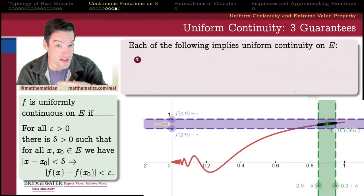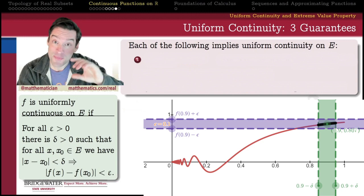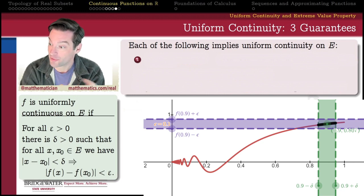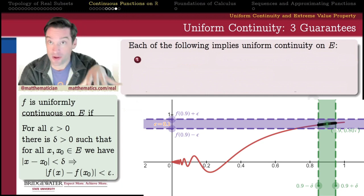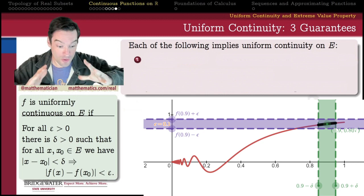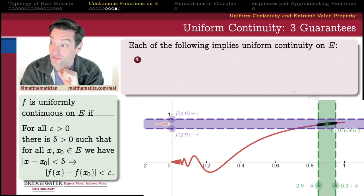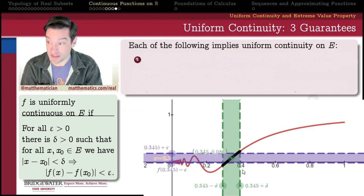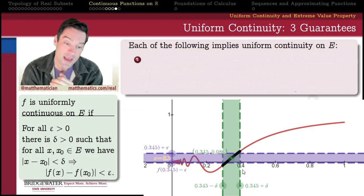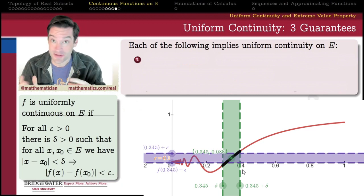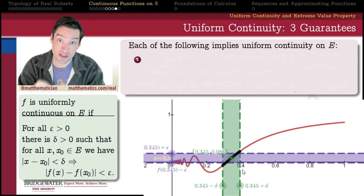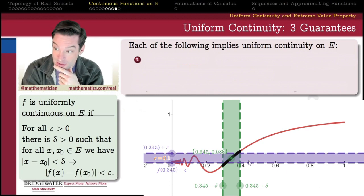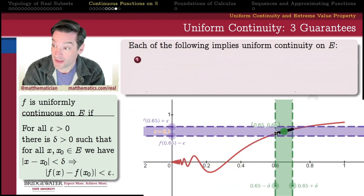We're already convinced that slope plays a role in how the epsilon you pick relates to the delta I pick in response. For example, if I have a function where the slope is really shallow at some points, then where the slope is shallow I have a lot more wiggle room to choose a larger delta to fit a given epsilon. But that same delta, if I try to go to a different place in the domain where the slope is getting steeper, no longer works. So how steep the graph is from place to place impacts how well our chosen delta will work for your epsilon, regardless of which x-value we're using.